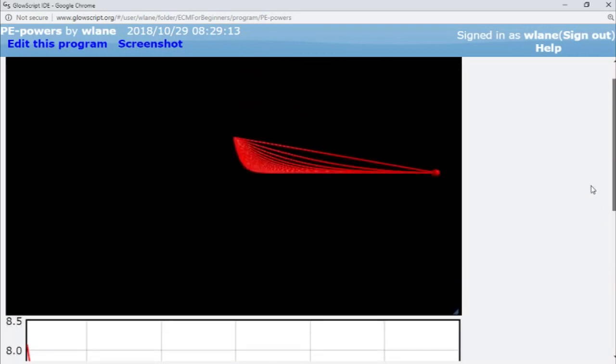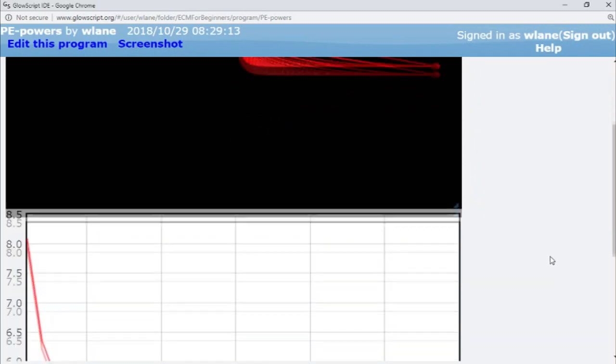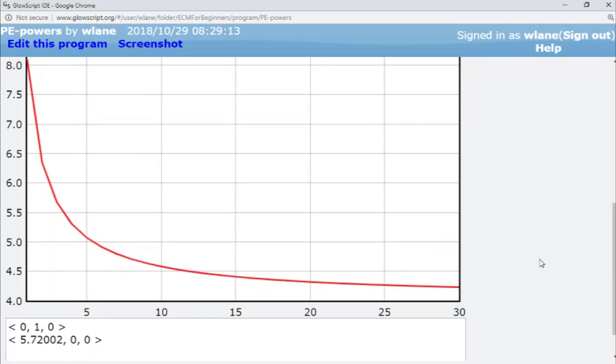You can also see that evidence here where the curvature stops changing as drastically. When you go from a power law of one to a power law of two, it's a pretty drastic change in the curvature. Going from two to three, not quite as drastic a change. From three to four, not as drastic a change. And by the time you get up here, it's not a very significant change at all between the curvature. They're all kind of blending together.